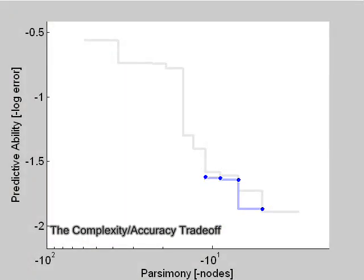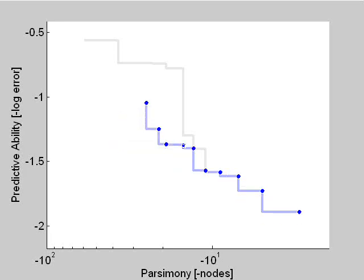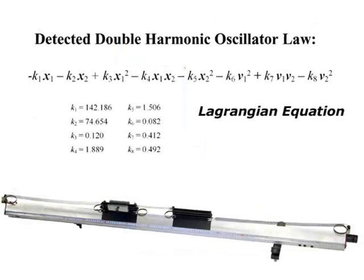The Pareto front shows the tradeoff between a candidate equation's complexity and its ability to model a non-trivial law. Over time, the algorithm explores and builds this front. Some equations that the algorithm finds are accurate but complex, while others are more simple but inaccurate. The equations we are most interested in lie between these two extremes.